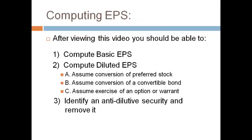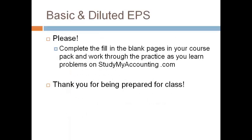After viewing this video, you should be able to compute basic earnings per share and diluted earnings per share. To compute diluted EPS, you need to be able to assume conversion of preferred stock, convertible bonds, and options or warrants. You should also be able to identify anti-dilutive EPS and remove the securities to make it dilutive. This concludes our discussion on earnings per share. Please fill in the blanks on the EPS pages in your course pack and work through the practice problems and the easy test on StudyMyAccounting.com. Thank you for taking the time to be prepared for class.